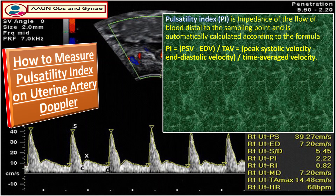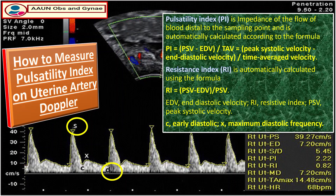In the Doppler waveform, S is the peak systolic velocity, D is the end diastolic velocity, and the average is the mean maximum Doppler frequency shift over the cardiac cycle. The resistance index is automatically calculated using the formula: RI = (peak systolic velocity − end diastolic velocity) / peak systolic velocity. On the waveform, C indicates the early diastolic frequency and X indicates the maximum diastolic frequency.